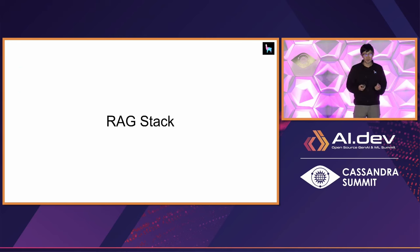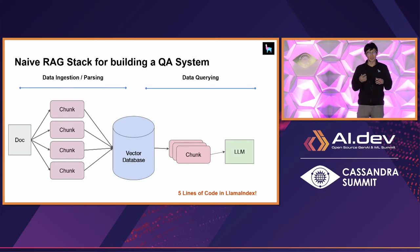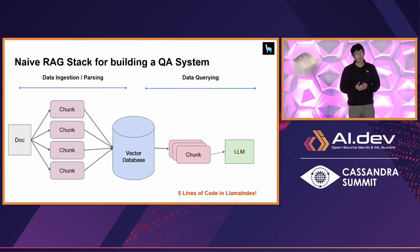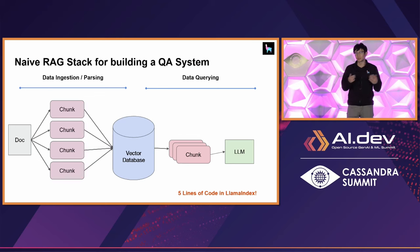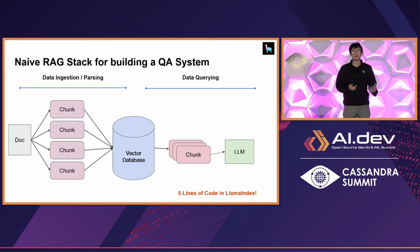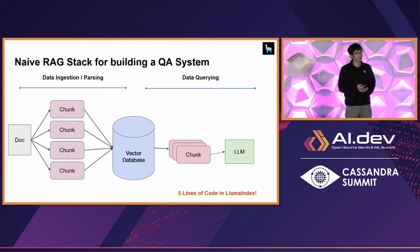Let's talk about retrieval augmented generation. If you've played around with LLMs this past year, you've probably heard this term — it's abbreviated as RAG. RAG is basically a conceptual framework for building a QA system that consists of two main concepts: data ingestion and parsing, as well as data querying. You start off with a source document like a PDF. You take that PDF, process it, and put it into a vector database like Cassandra.